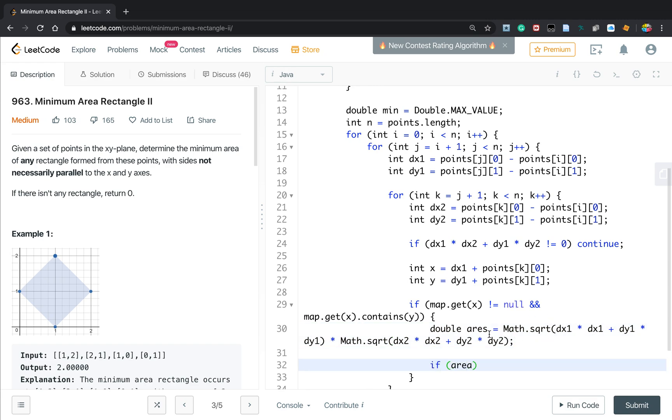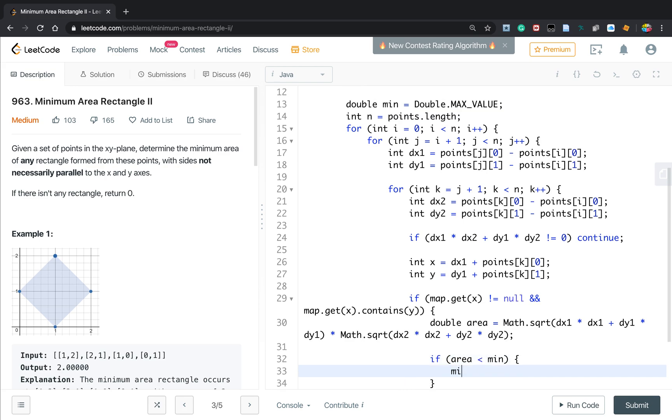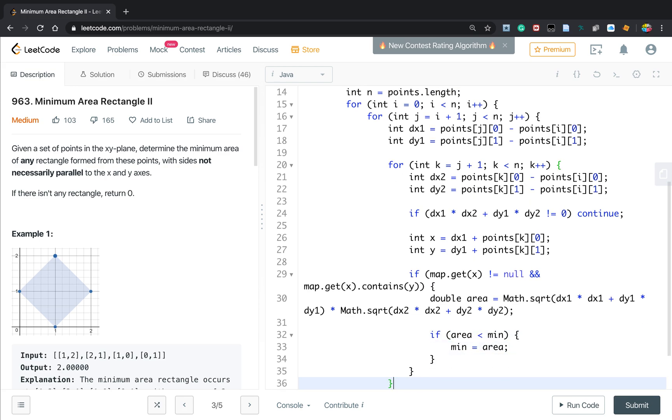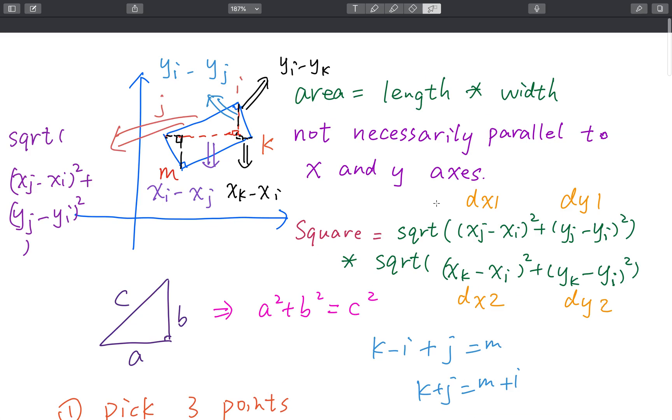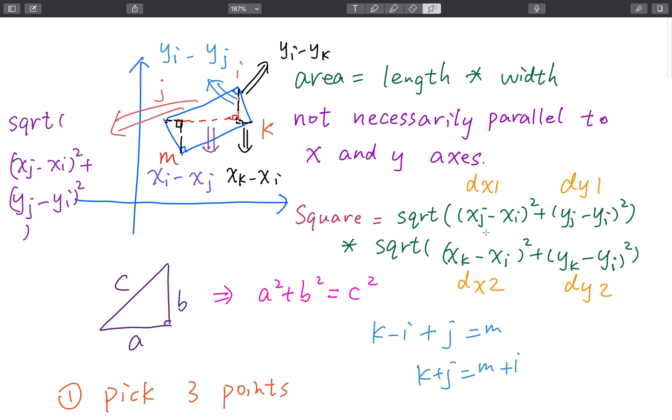If this area - sorry, typo here - if this area is less than minimum, then minimum just be this area. This formula is from this part. You can check it afterwards.